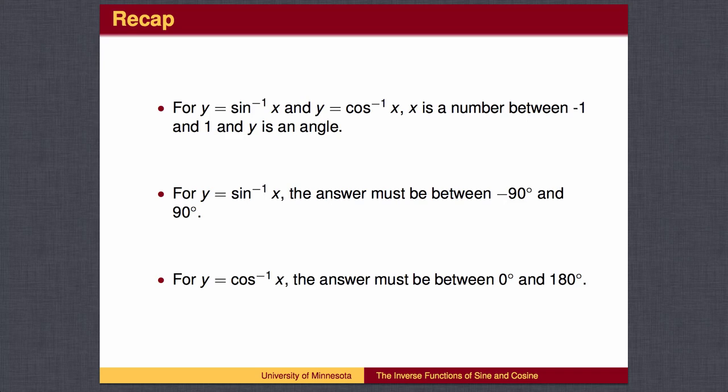To recap, the inverse of a trig function reverses the roles of the input and the output so that the input to an inverse trig function is a number and the output is an angle. The numbers that are input into the inverse sine and inverse cosine functions range from negative 1 to 1 and include the special unit circle values of 1 half, square root 2 over 2, and square root 3 over 2.